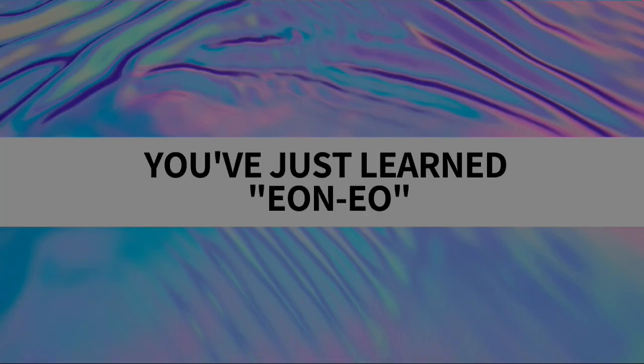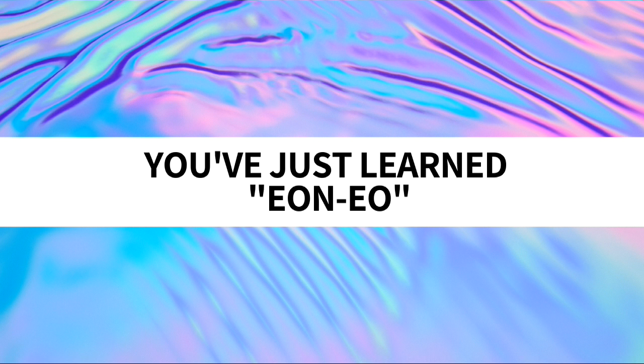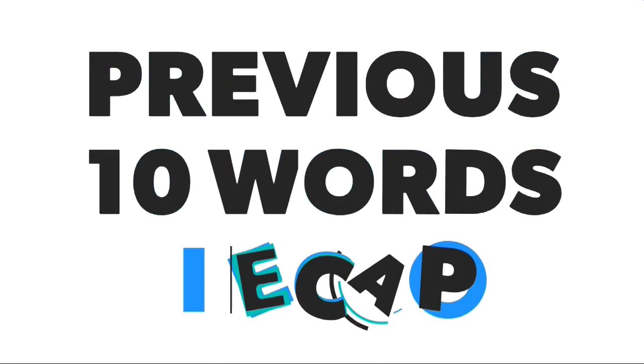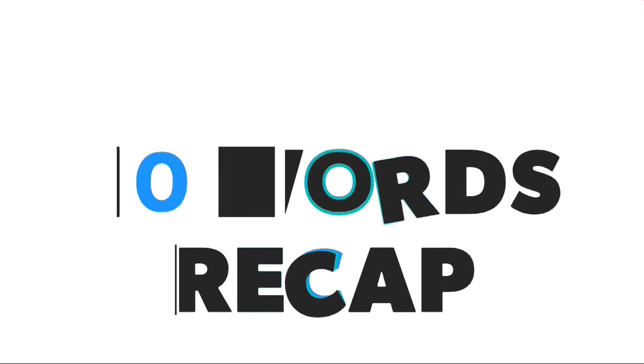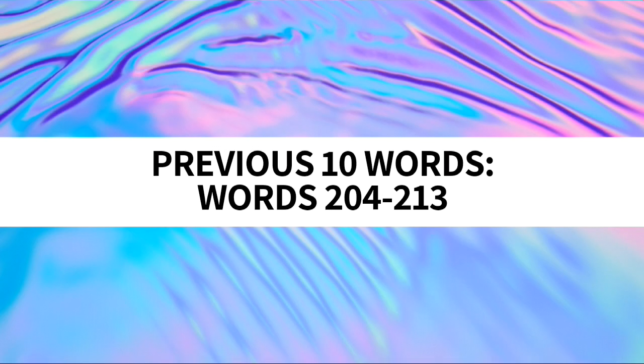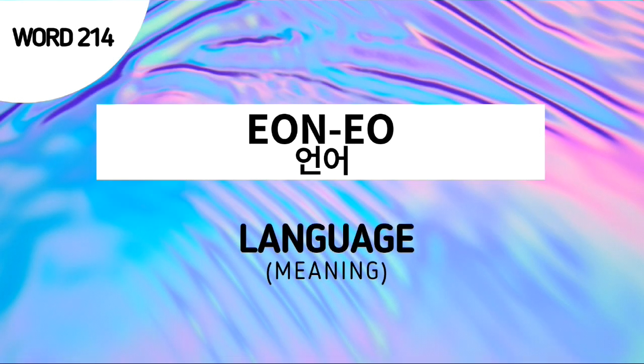Onoh means language. And with that, you've just learned 'onoh.' Now let's proceed to the previous 10 words recap. As of now, the previous 10 words are words number 204 to 213. But don't forget our word for today — word number 214, 'onoh,' which means language.